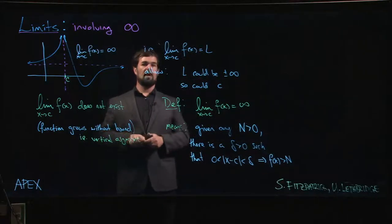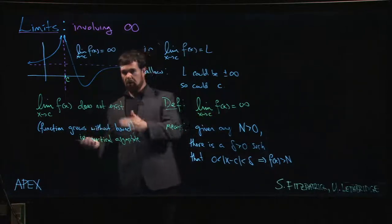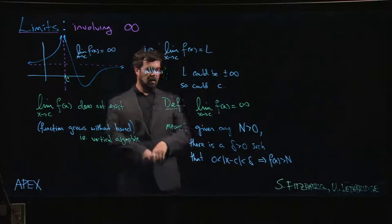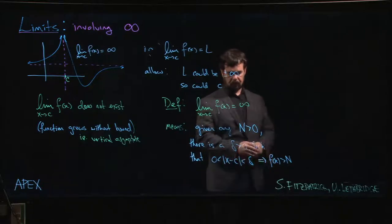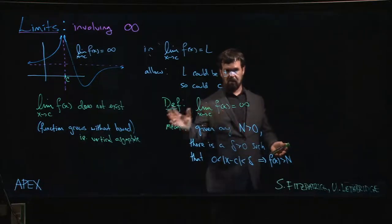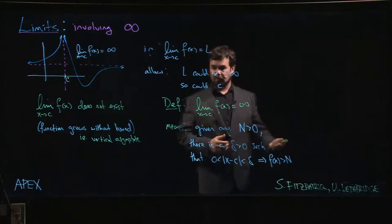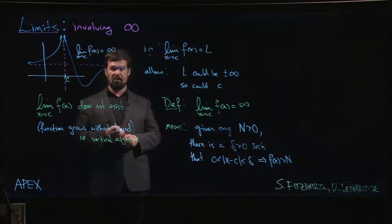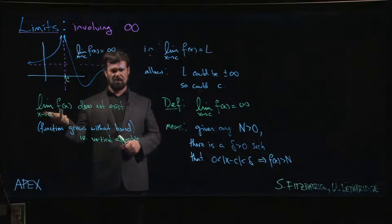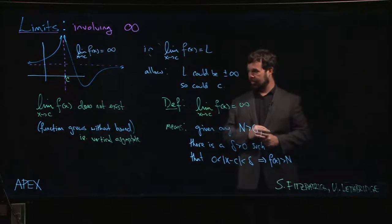The other variations we could make is we might want to consider one-sided limits that are infinite. We just make the same modification that we did when we talked about one-sided limits that had a finite value. Instead of saying that the absolute value is between 0 and delta, we would just say that x, for left-handed limit, is between c minus delta and c, or for right-hand limit between c and c plus delta. There's several different variations here: plus infinity, minus infinity, left-hand at plus infinity, left-hand at minus infinity, right-hand at plus infinity, right-hand at minus infinity. They're all saying basically the same thing.